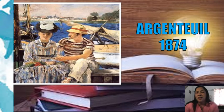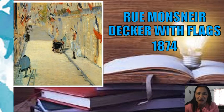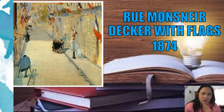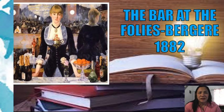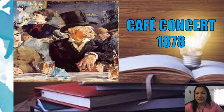Next is 'Rue Mosnier with Flags' — without the title, it would be difficult to identify the subject, but with it you can see flags and identify it as a street or road. Then 'A Bar at the Folies-Bergère,' 1883 — a typical scene of a lady with some wine. And 'Café Concert,' 1878 — a scene from a coffee shop.